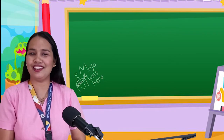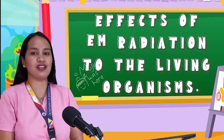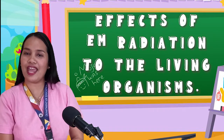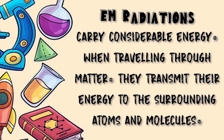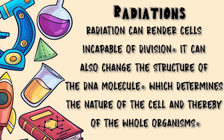Now let's look at the effects of electromagnetic radiation on living organisms. Radiation carries considerable energy. When traveling through matter, it transfers energy to surrounding atoms and molecules. This results in excitation, ionization, and dissociation of atoms and molecules along the radiation path. These reactions can damage cells and even break up molecules. Radiation can render cells incapable of division. It can also change the structure of DNA molecules, which determines the nature of the cell and the biological organism.